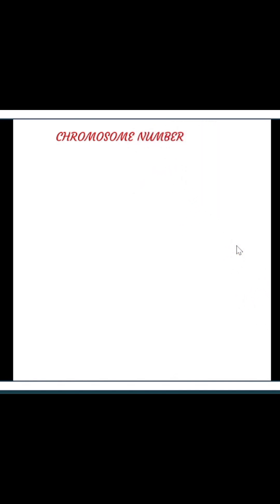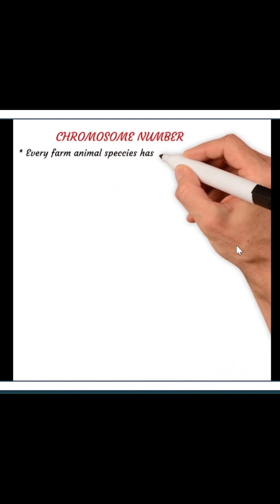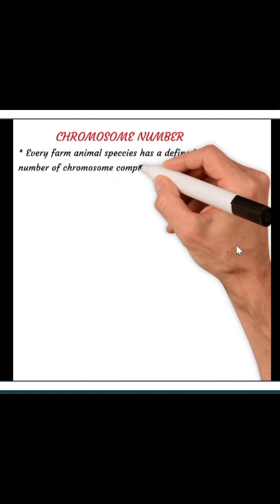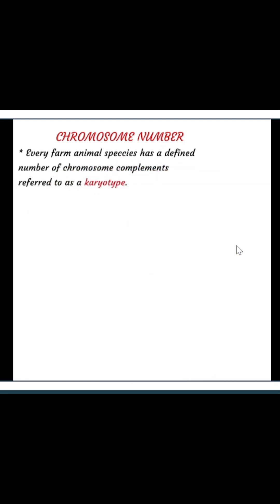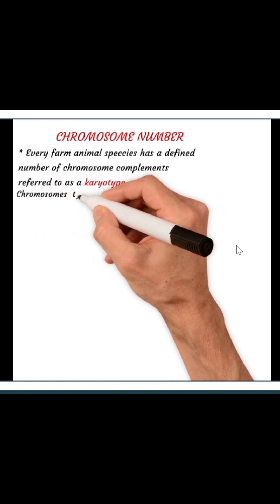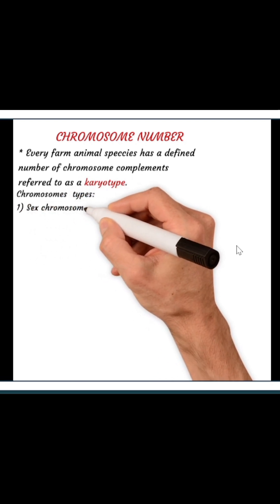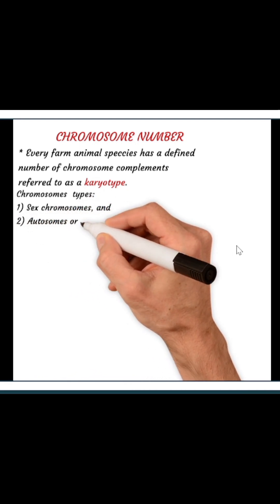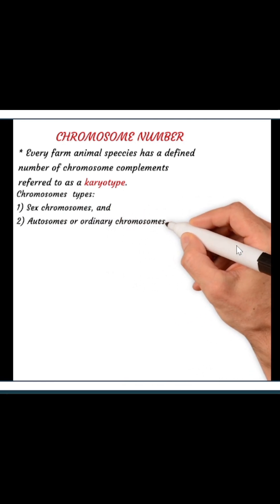Chromosome number is the next thing we are going to look at. Every species of farm animal has a defined number of chromosomes. The full chromosome complement of any farm animal species is referred to as the karyotype. We have different types of chromosomes: the sex chromosomes and the ordinary chromosomes. The sex chromosomes are responsible for determining whether the animal is going to be a male or a female.